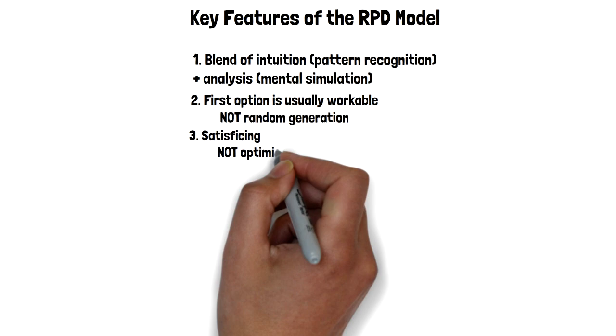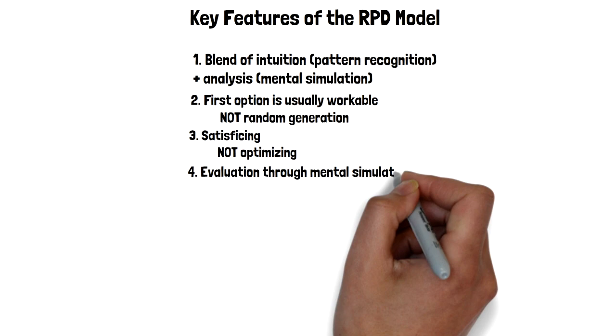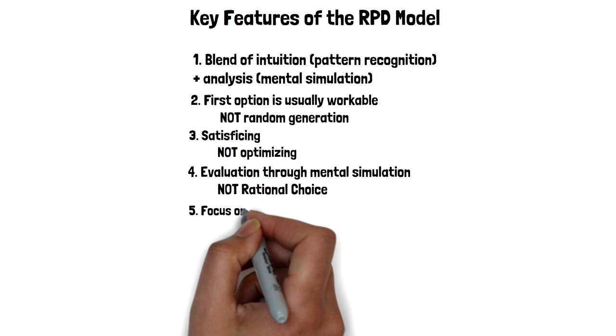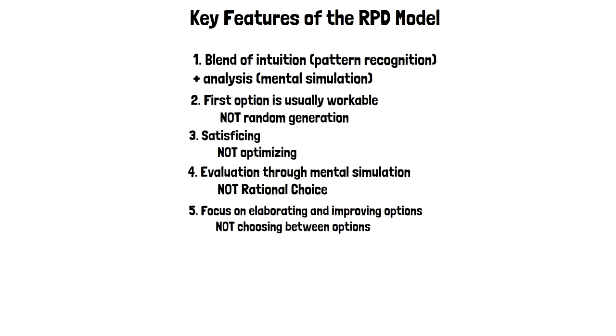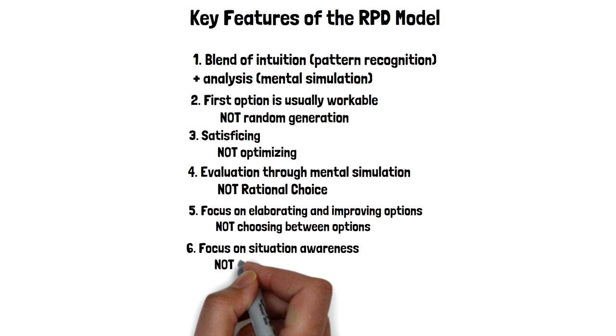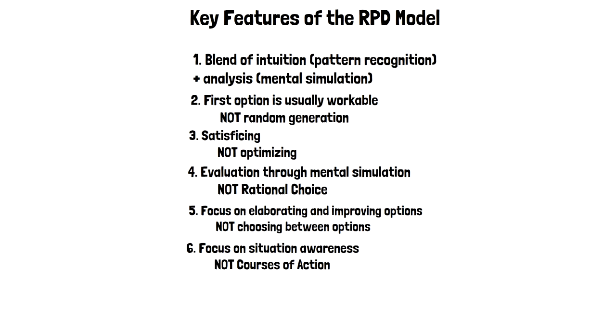Fourth, I'm evaluating them by mentally simulating them, by imagining them, not by setting up a matrix. Five, I'm trying to improve the options as I'm doing the mental simulation rather than comparing them and contrasting them. The focus of this model is on situation awareness. It's not on the courses of action. Once I know what the situation is, it's usually obvious what to do. And finally, this is a model of a decision maker primed to act, not someone waiting to complete the analysis.